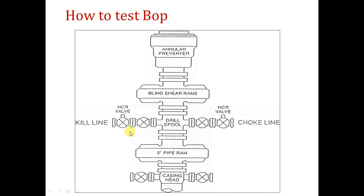Number two: how can you see the tests are done? You use the accumulator unit to close the rams — close the blind ram, close the pipe ram, or close the annular — and you will see a drop in the pressure of the manifold or on the accumulator, and then it recharges. You will see that the rams are closing, with their pistons going inside. But the HCR valve has a unique property: when the two shafts are going outside, this means it is closed; when the two shafts are going inside, this means it opens. Take care of this — very important note for the HCR.